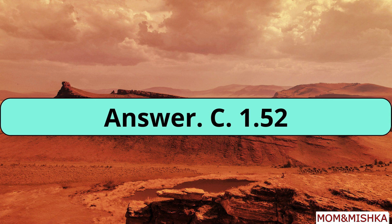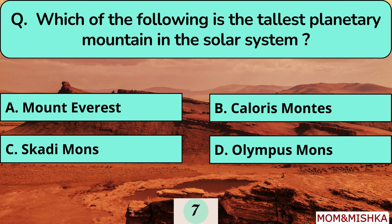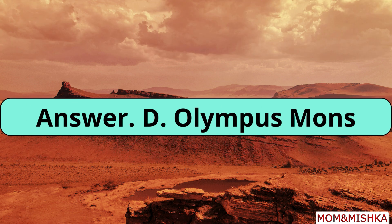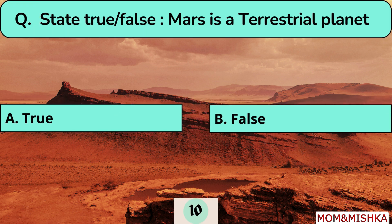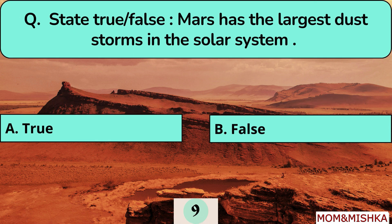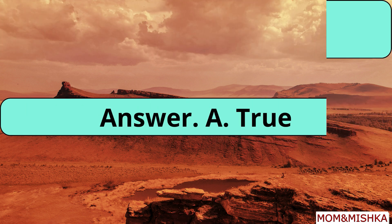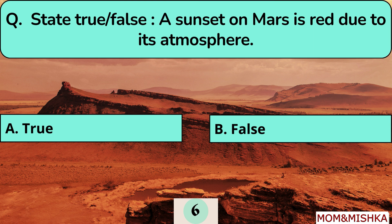Mars is 1.52 times as far from the Sun as Earth. Olympus Mons is the tallest planetary mountain in the solar system. Mars does not have rings — that is false. Mars is a terrestrial planet — true. Mars has the largest dust storms in the solar system — true.